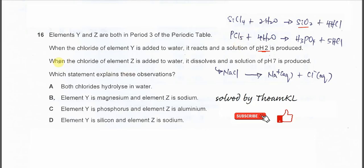And the next statement is when the chloride of element Z is added to water, it dissolves and a solution with pH 7 is produced. This one is telling us that the chloride is sodium chloride, because in this Period 3 chloride, only the sodium chloride will form a solution with pH 7. Magnesium chloride is 6.5. Therefore, we know that element Z is sodium.